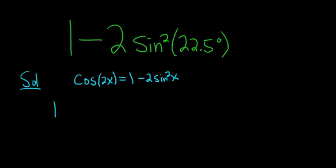So let's go ahead and do it. 1 minus 2 sine squared of 22.5 degrees. Our x in all of this is 22.5, that's our x.